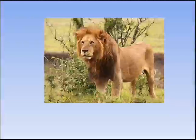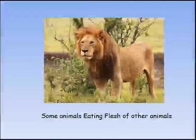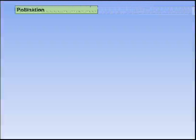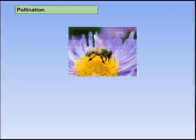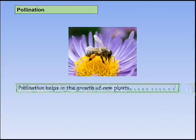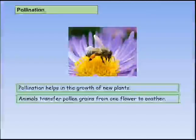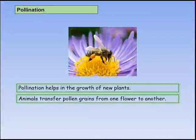Plants also depend on animals for pollination. Pollination helps in the growth of new plants. Animals transfer pollen grains from one flower to another.